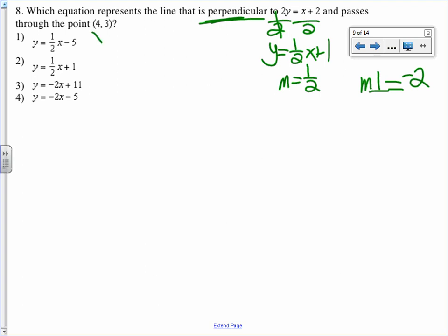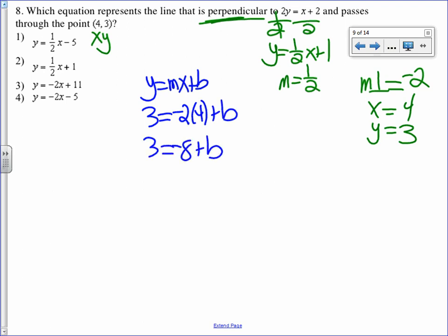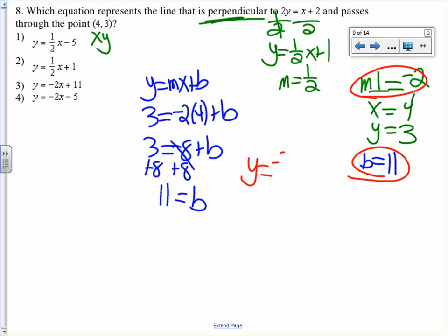Now if it passes through this point, I know that my M perpendicular is negative 2, my X is 4, my Y is 3, and I'm going to substitute in to find B. 3 equals negative 2 times 4 plus B. 3 equals negative 8 plus B. Solve for B. B equals 11. Once I have B plus M, I can substitute that into Y equals M X plus B to get my answer.